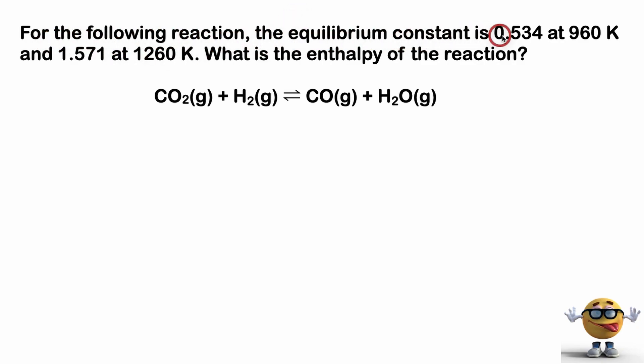So for the following reaction, the equilibrium constant is 0.534 at 960 Kelvin and 1.571 at 1260 Kelvin. And the question is asking us, what's the enthalpy of the reaction? And we have the chemical reaction right here. So what are we given? Well, we're given a K1, right? We're given a T1. We're given a K2 and a T2 as well, and we're trying to solve for this here. Now, we need to solve for the standard enthalpy of the reaction. It doesn't say that in here, and often these questions omit that, but that is kind of an important point. So this is the change in standard enthalpy of the reaction of what we're solving for.